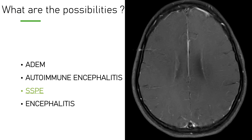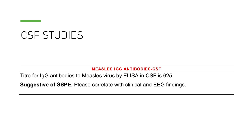We ordered many investigations from the CSF, especially measles IgG antibody test, which came back positive. The IgG titer is positive at 625. The pattern is more in favor of SSPE.